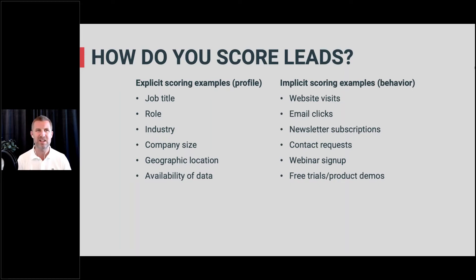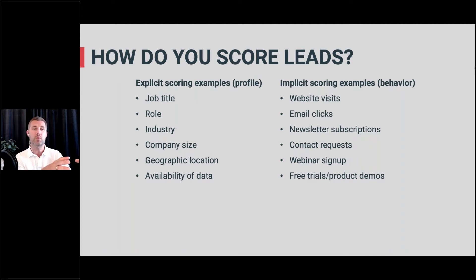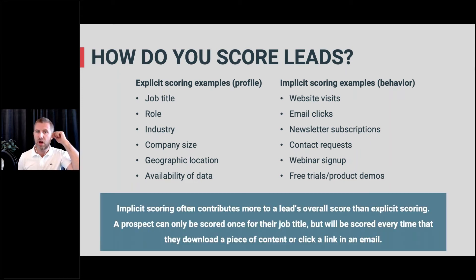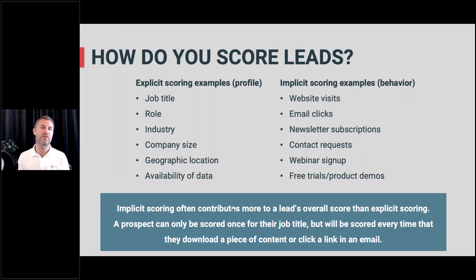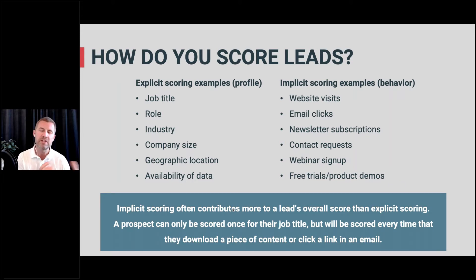And then there are the implicit scoring examples. As mentioned, this is everything that they do — where do they click, where do they visit, do they open your emails, do they answer surveys, do they register for webinars? Implicit scores often contribute more to the overall lead score because this happens over time again and again. For explicit scoring, you just get scored for your title once. But there may be explicit scores you really want to give a lot of value to — for instance, if someone is squarely in the correct industry, you may want to add a lot of points based on that.